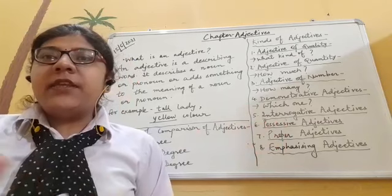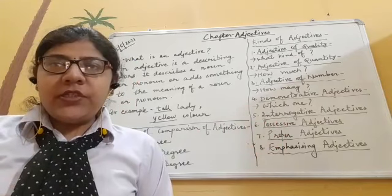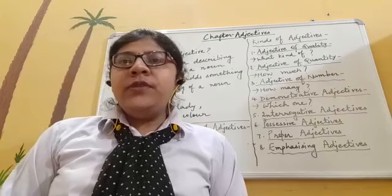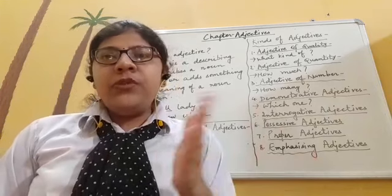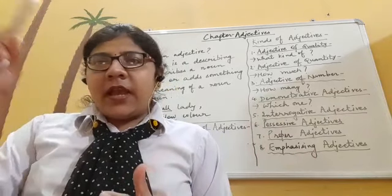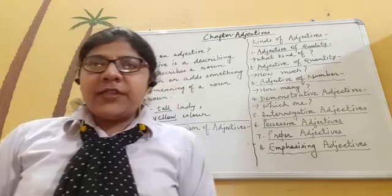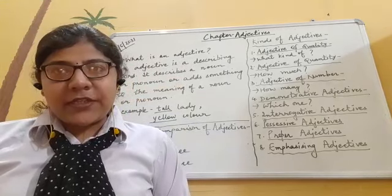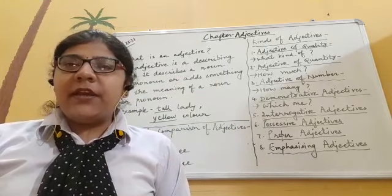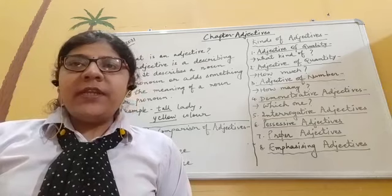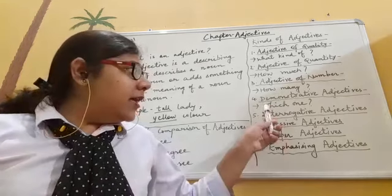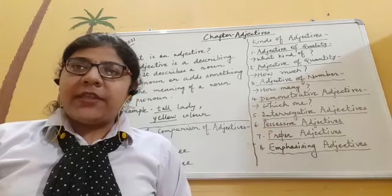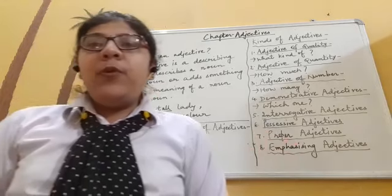Next are interrogative adjectives — those which are used for asking questions. They include what, which, whose, whom, and so on. For example, 'whose painting is the best?' — 'whose' is the interrogative adjective because it is used to ask a question. You will always find a question mark in sentences with interrogative adjectives.